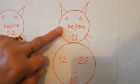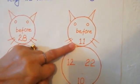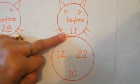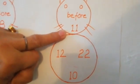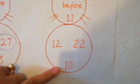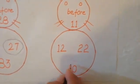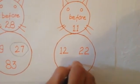Again, what's written here? Before. Which number is this? 11. What comes before 11? 12, 22, 10. Now what comes before 11? 10. We will ring this number.